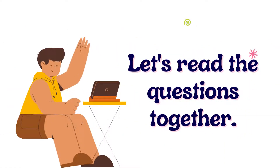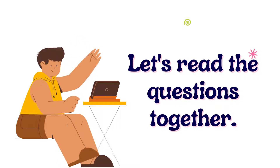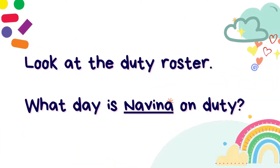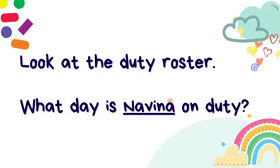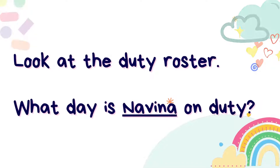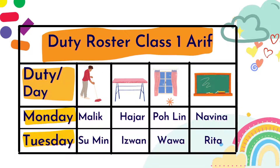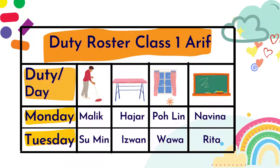Now, let's read the questions together about Problem Solving of Time. Are you ready? Let's read the question together. What day is Navina on duty? Now, let's have a look at the Arif duty roster. We have duties of sweeping the floor, arranging the table, cleaning the window, and cleaning the board. Our friends here are named Malik, Sumin, Hajar, Izwan, Pohlin, Wawa, Navina, and Rita.